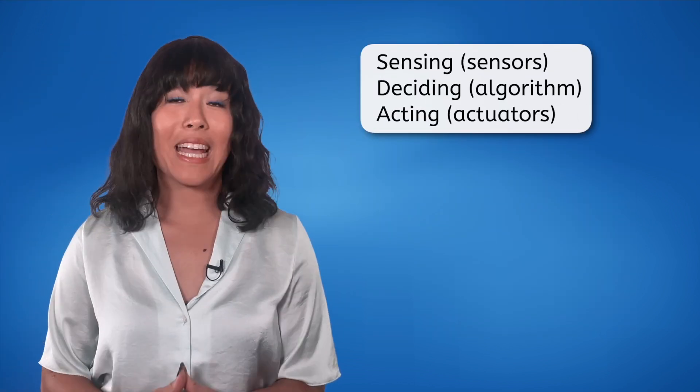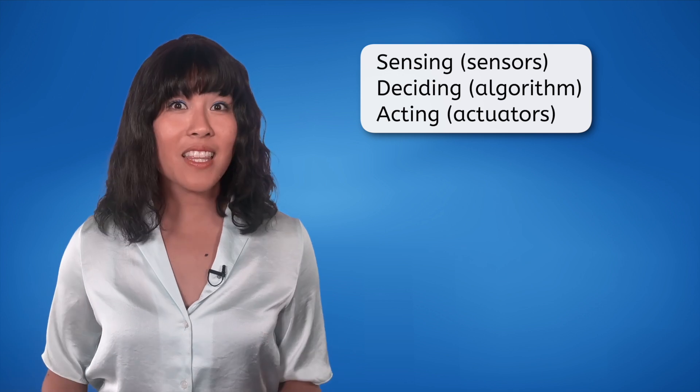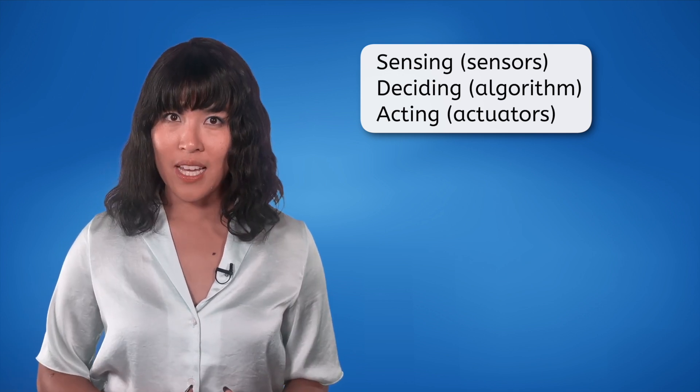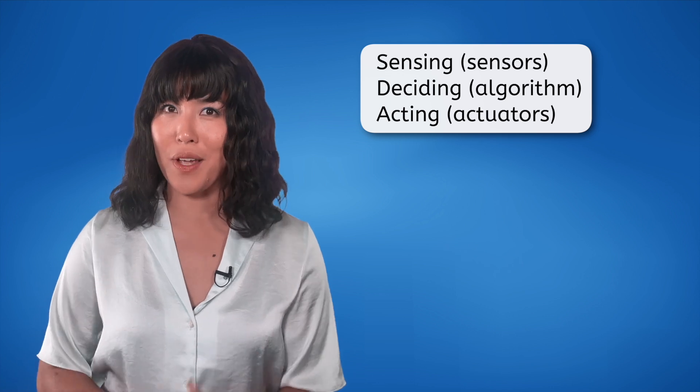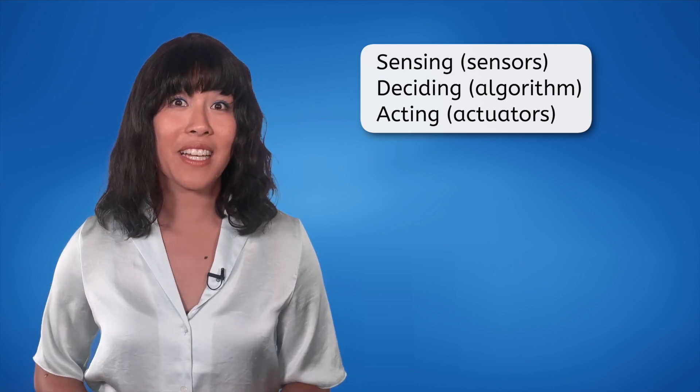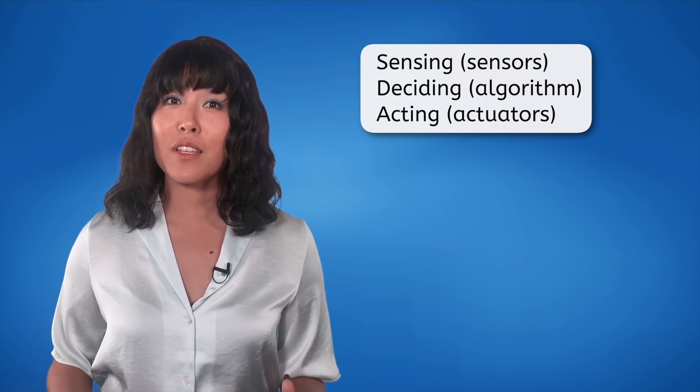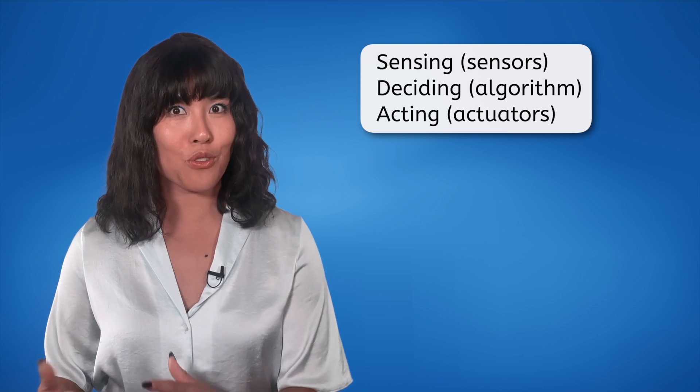Remember, creating automata is all about sensing the environment using sensors, deciding using an algorithm, and acting using actuators, all in small calculated steps. Each decision is based on the latest data the sensors provide. Automation and robotics, while advanced, boil down to some fundamental principles.